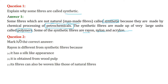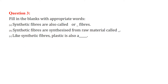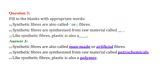Next question: mark the correct answer — rayon is different from synthetic fibers because it is obtained from wood pulp. That is the answer. Fill in the blanks: synthetic fibers are also called artificial or manmade fibers. Synthetic fibers are synthesized from a raw material called petrochemicals. Like synthetic fibers, plastic is also a polymer.